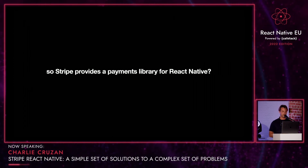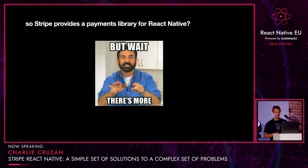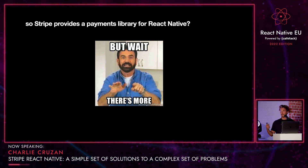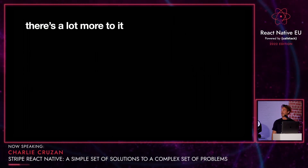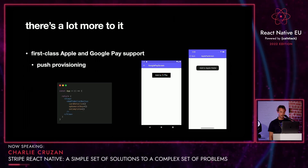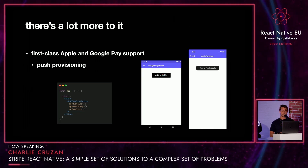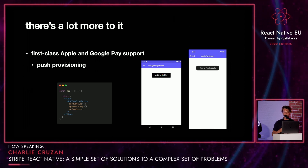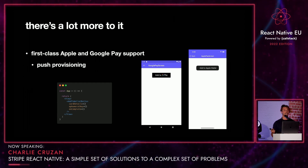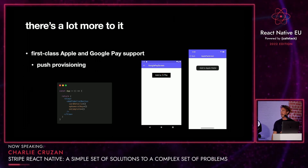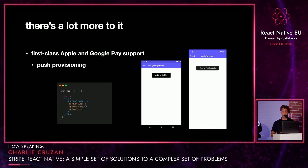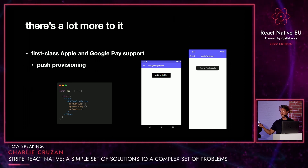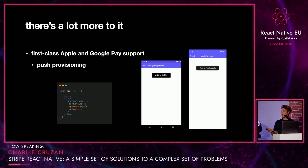Stripe provides a payments library for React Native — makes total sense, Stripe is a payments company. But there's actually more. The SDK comes with first-class Apple and Google Pay support, including finer details like push provisioning, which is adding a new card to your user's digital wallet. This is actually a really complicated flow natively, but in React Native it's as simple as just rendering this add to wallet button component and you're done. Stripe issuing makes that really, really easy.